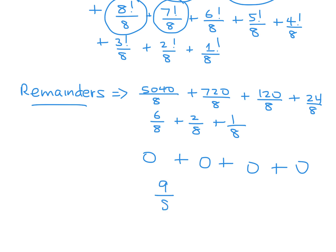But remember, we have to divide that by 8 because we're interested in remainders. When you divide 9 by 8, you get 1 with a remainder of 1. So that is the answer to this question.